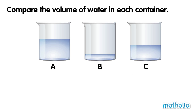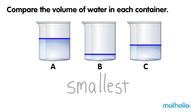The level of water in container B is lower than the level of water in container A and C. The volume of water in container B is the smallest.